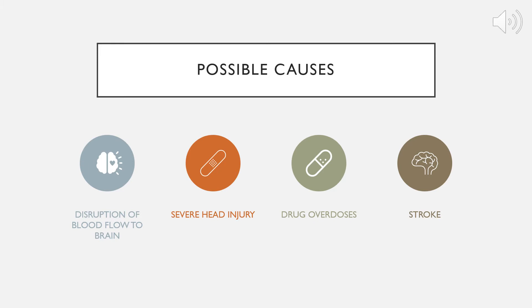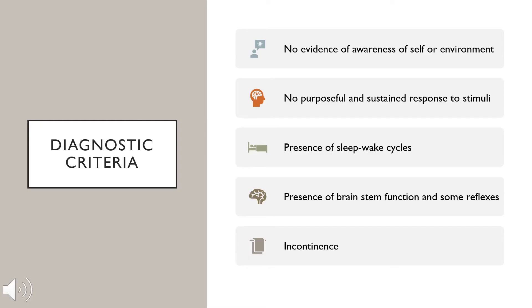There are many different events that could cause persistent vegetative states, but some of the more common ones are disruption of blood flow to the brain, severe head injuries, drug overdoses, and strokes. Some of the hallmark features required for a diagnosis include no evidence of awareness of self or surroundings, no purposeful sustained response to stimuli, presence of sleep-wake cycles congruent with the circadian rhythm, brain stem function and some reflexes are evident, and general incontinence. Essentially, they're looking for periods of apparent sleep and wakefulness, but during wakefulness there's no response to stimuli or purposefulness.